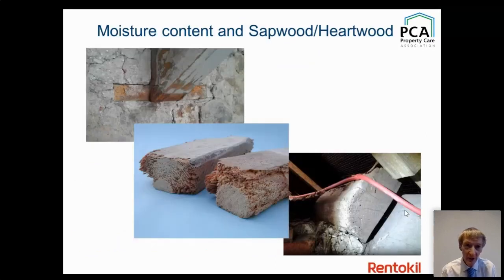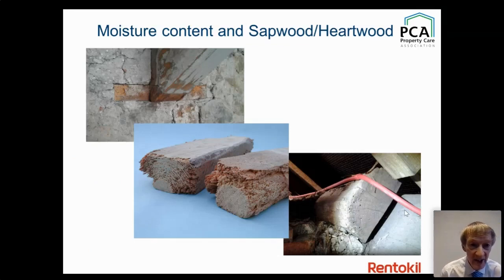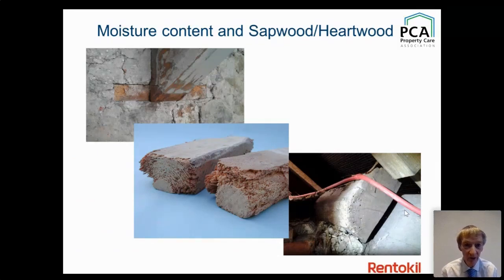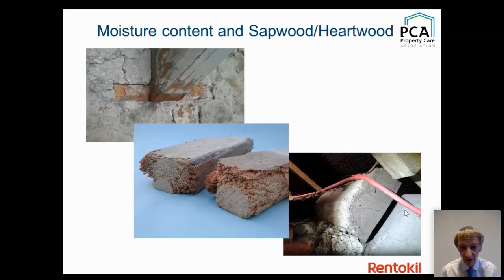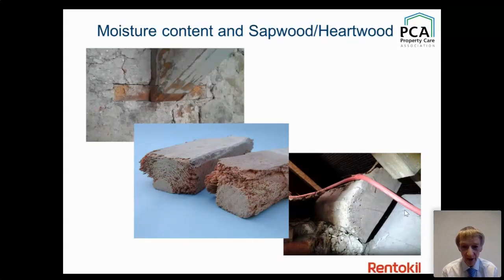Buried timbers in damp walls support good insect infestations — an example from Northern Ireland shows common furniture beetle. In one photograph, the sapwood has been completely destroyed while the heartwood at the bottom is untouched, because those timbers were resting on a very damp wall. Once you get an amazing infestation of common furniture beetle, it can completely destroy the sapwood.